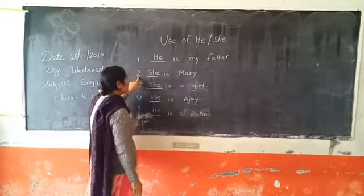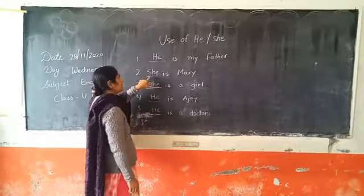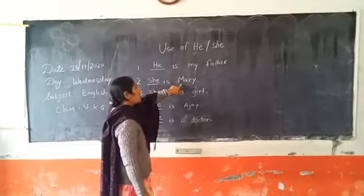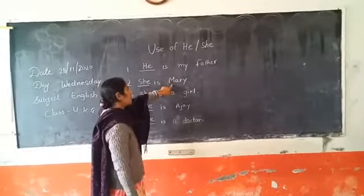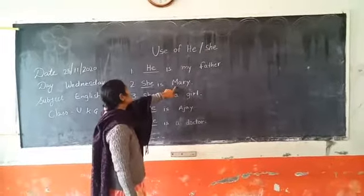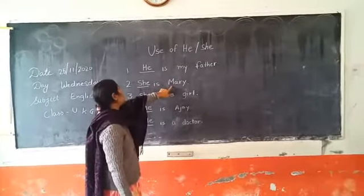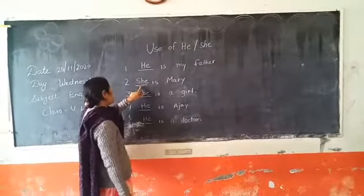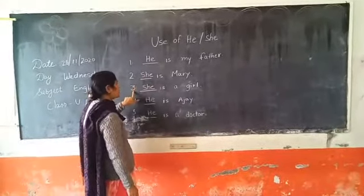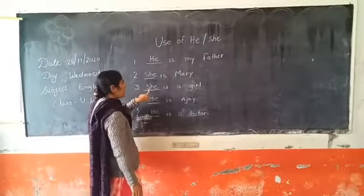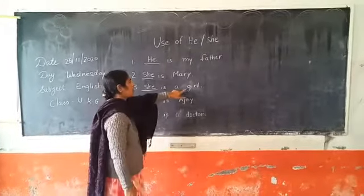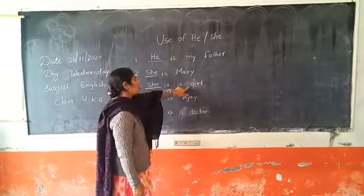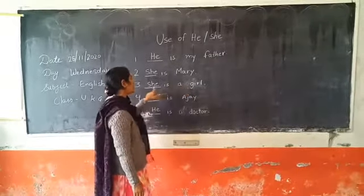And in the second sentence, dash is married. Married is female, so we use 'she' for married. And in the third sentence, dash is a girl. Girl is female, so we use 'she' here.